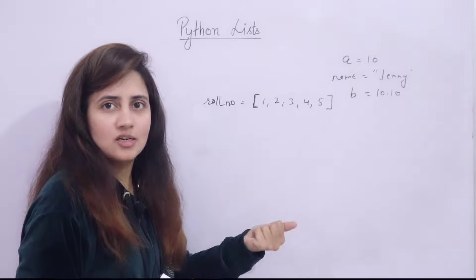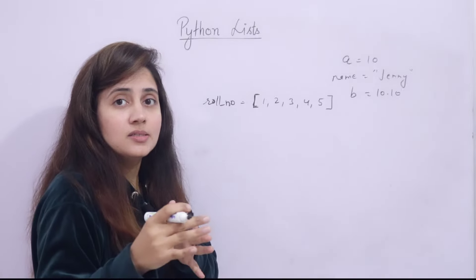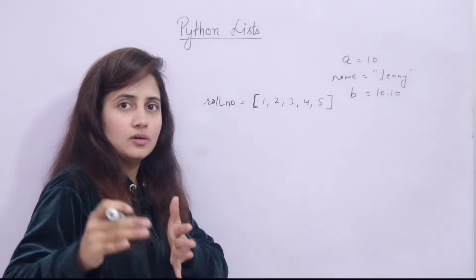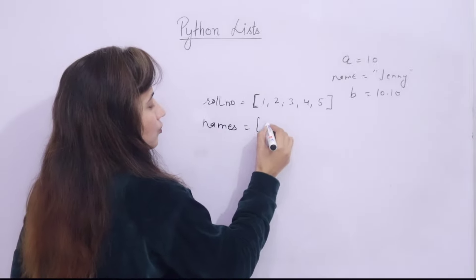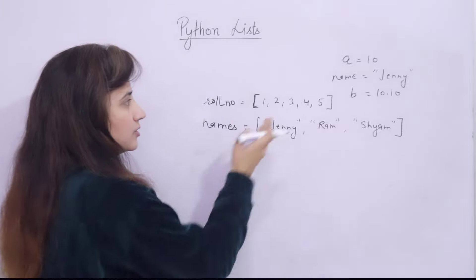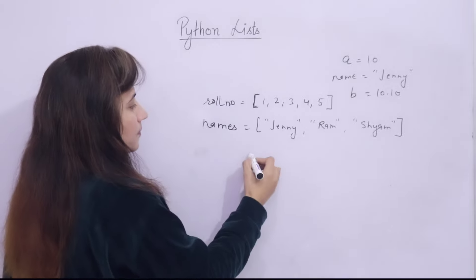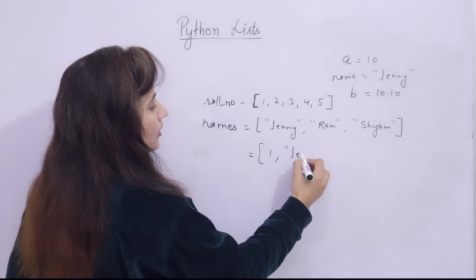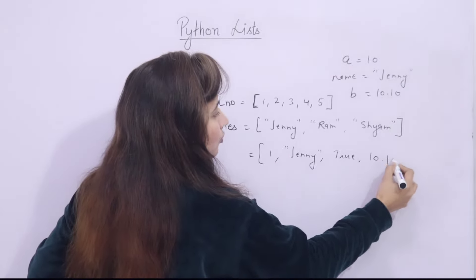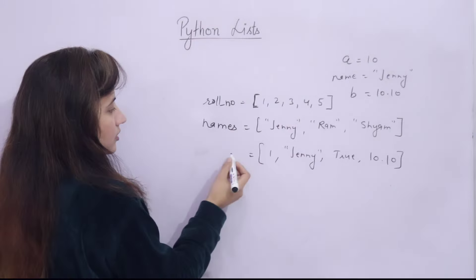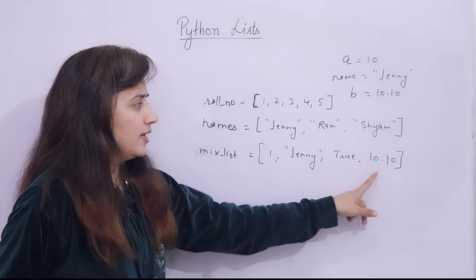So basically this list is what? It's a data structure — it's just a way of storing and organizing the data. It comes under sequence data type because it contains a sequence of types of data. And we can have a mixed type of list — suppose in one list I am taking one integer, one string, one boolean (true or false), and one float like 10.10. So collection of different data types is also allowed.